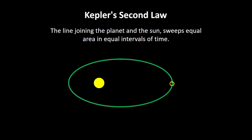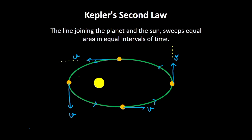Let me assume the planet is at a particular position and after some time moves to another position. We can find the instantaneous velocity at each point — at this position it points in this direction, at this position like this, and so on. The planet is obviously not going in the same direction; it is bending towards the star at each position.